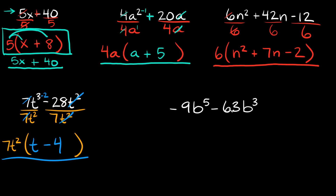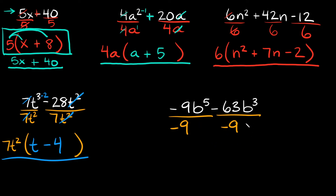Last problem: negative 9b to the fifth minus 63b cubed. What's the biggest number we can pull out? We can pull out a 9, but actually we can pull out negative 9, because negative 9 divides evenly into negative 9 and into negative 63. For the 'b' terms: here we have 3 b's and here we have 5 b's, so we can pull out at least 3 b's from each side. So our greatest common factor is negative 9b cubed.